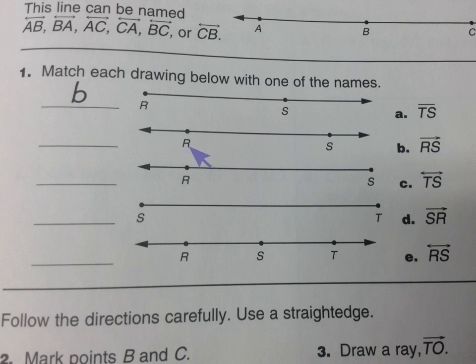Look at this one. This is also the same two letters here for the points, the endpoints, R and S. But if we look at both sides, it keeps going with the arrow, so this is a line. So we need line RS, or SR, there it is. So I would write E on this one.